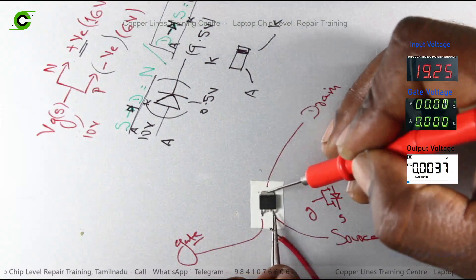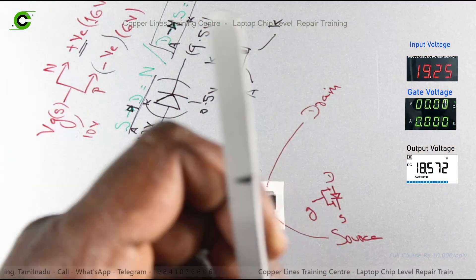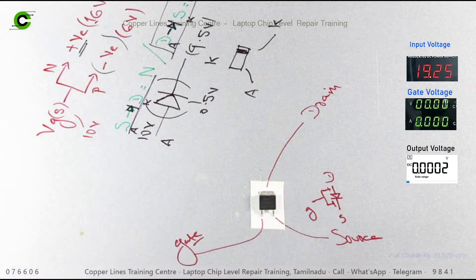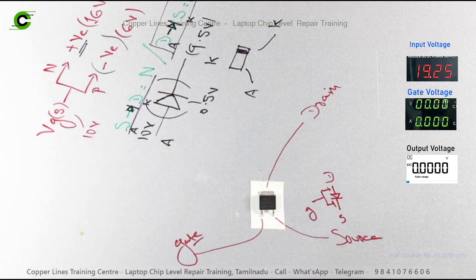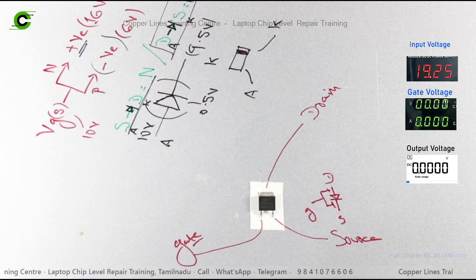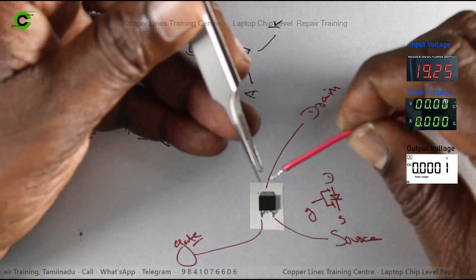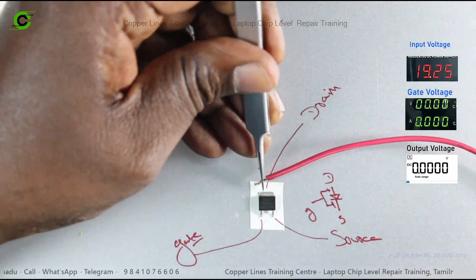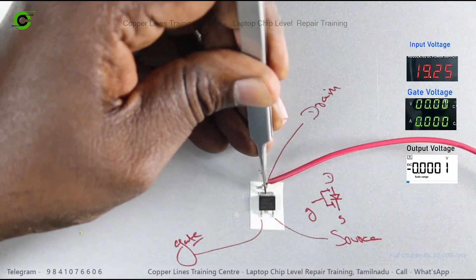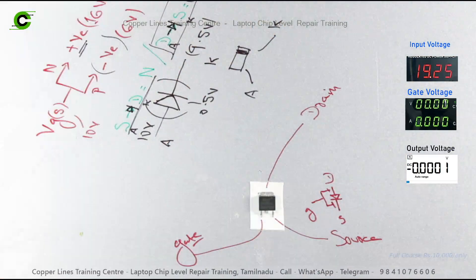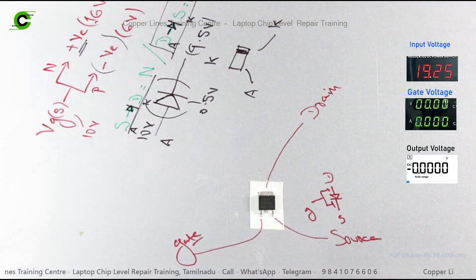Now the output is 0V. This is the concept of source to drain for the N channel. The drain to source is also a diode. How to fix the drain in the power supply — that is the reverse bias — and the board will be live.